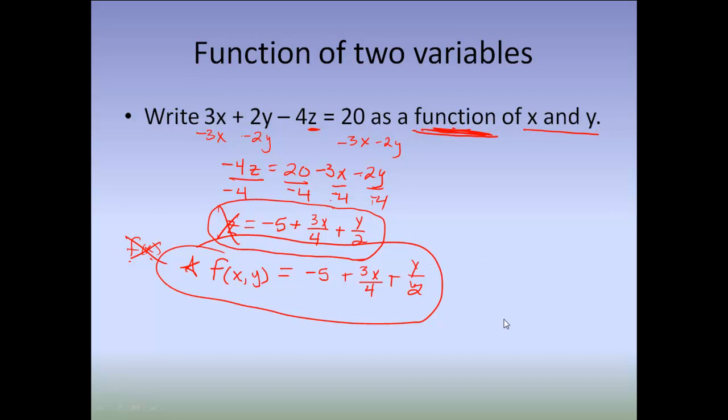Now, from here, they might tell you to do, maybe evaluate it. Maybe they say find F of 0 comma 2. Well, what they're telling you is they're telling you plug in 0 for X, plug in 2 for Y and tell me what the answer is. So, we could come back to our equation here and I could plug in my 0 for my X. I could plug in my 2 for my Y and then I could solve this out. So, 3 times 0 is 0 divided by 4 is 0. 2 over 2 is 1. So, I have negative 5 plus 1 which gives me a negative 4. So, I could say F of 0 comma 2 is equal to negative 4.